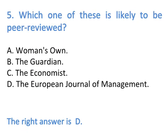Number 5: Which one of these is likely to be peer reviewed? The right answer is D, which is the European Journal of Management.